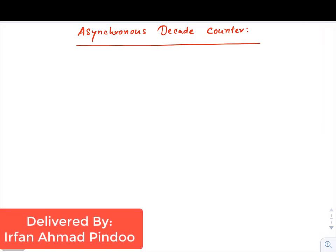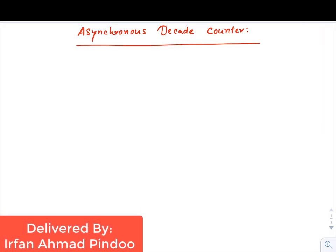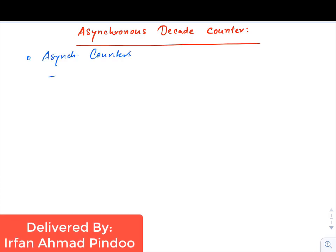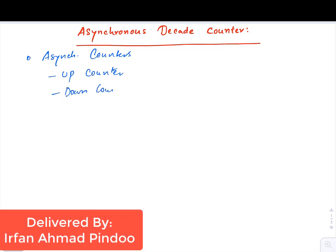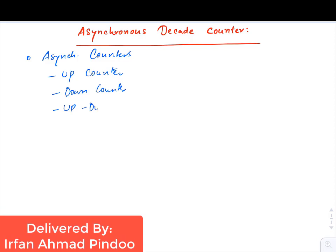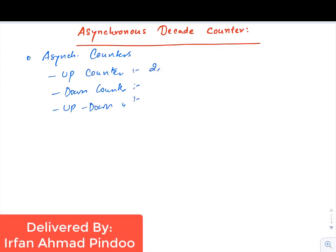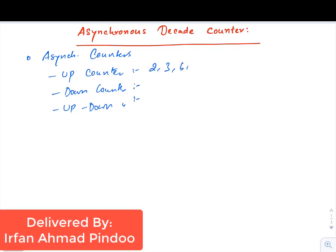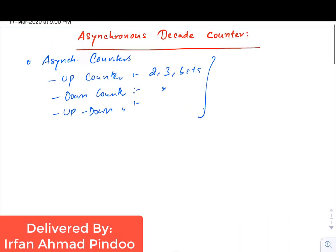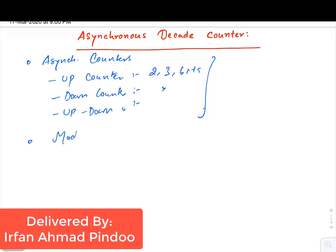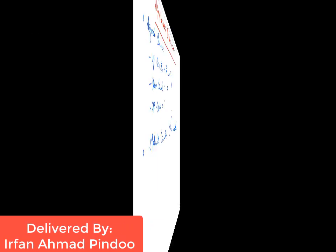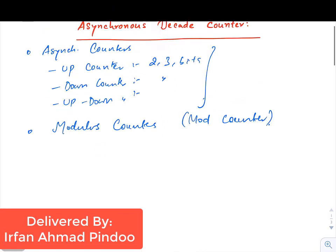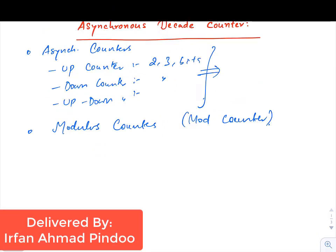Welcome back students. In this video I am going to discuss asynchronous decade counter. What we have discussed previously is up counter, down counter, and up-down counter, furthermore for two bits as well as three bits. Now there is one more application of asynchronous counter and that is basically called as modulus counters or mod counter.